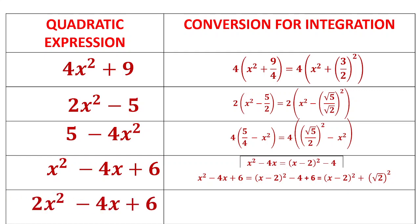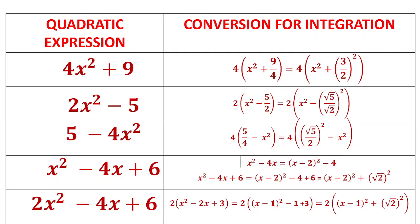When the coefficient of x² is other than 1, first take it out. For example, 2x² - 4x + 6: take 2 out → 2(x² - 2x + 3). Then x² - 2x = (x - 1)² - 1, so altogether (x - 1)² - 1 + 3 = (x - 1)² + 2 = (x - 1)² + (√2)². The technique: take the coefficient of x² outside if other than 1, then complete the square using half the coefficient of x.